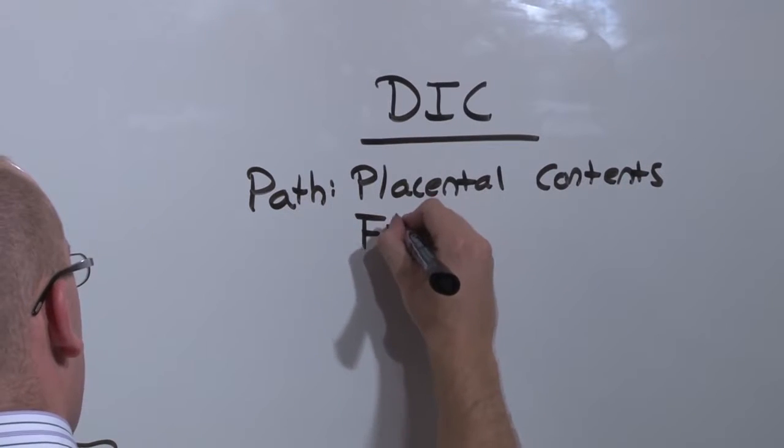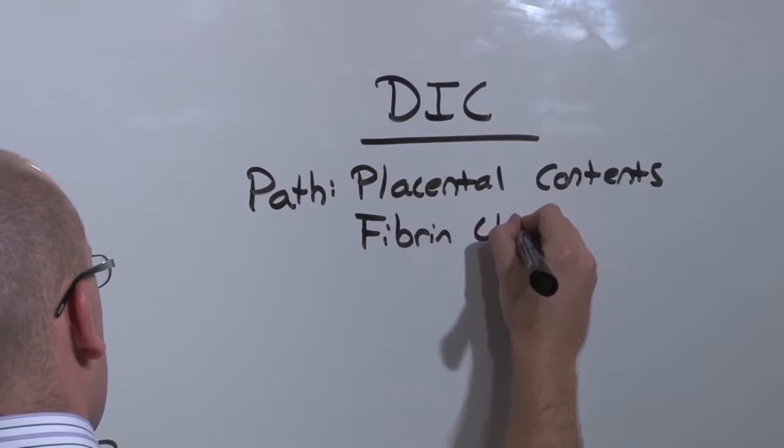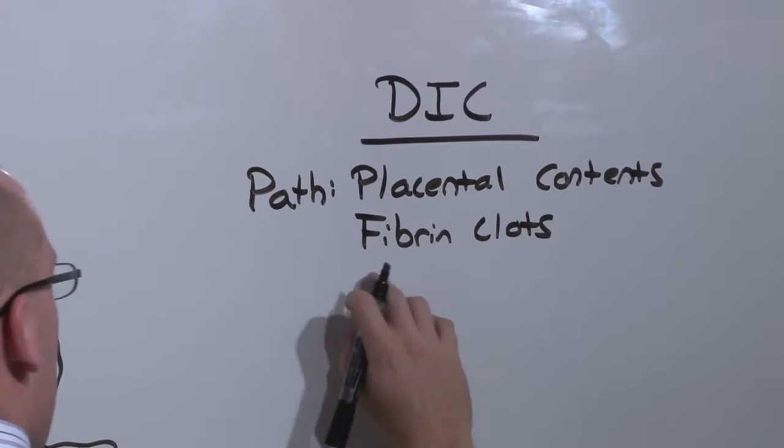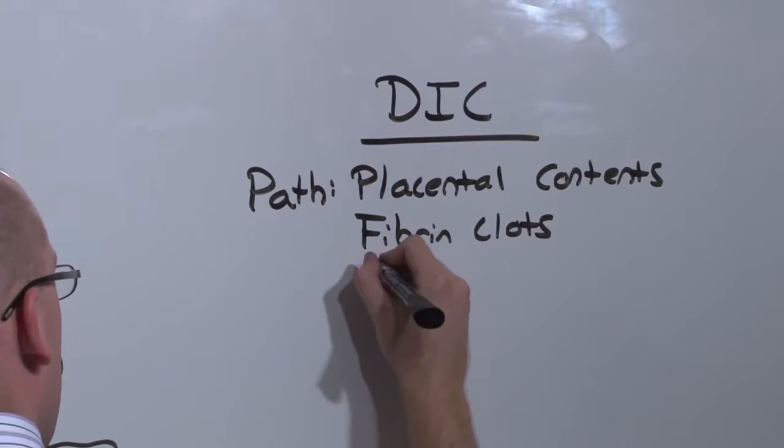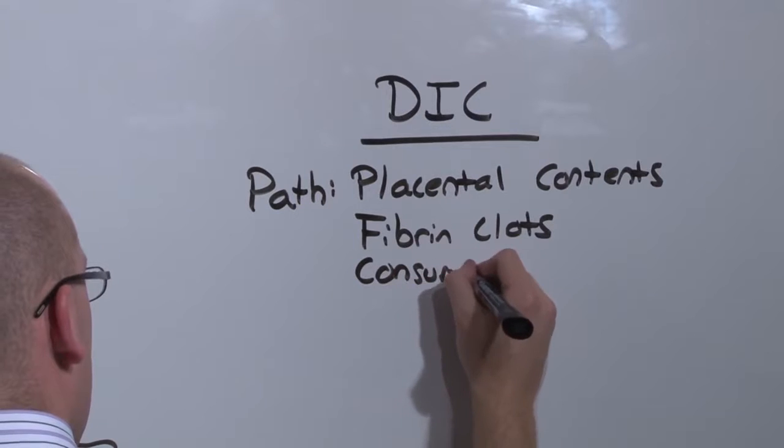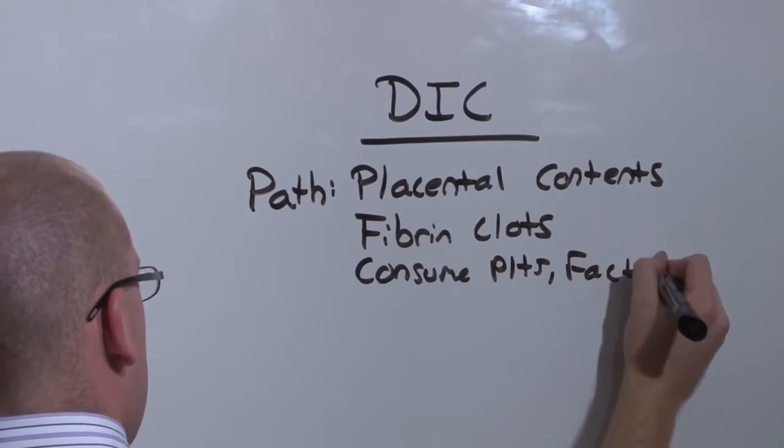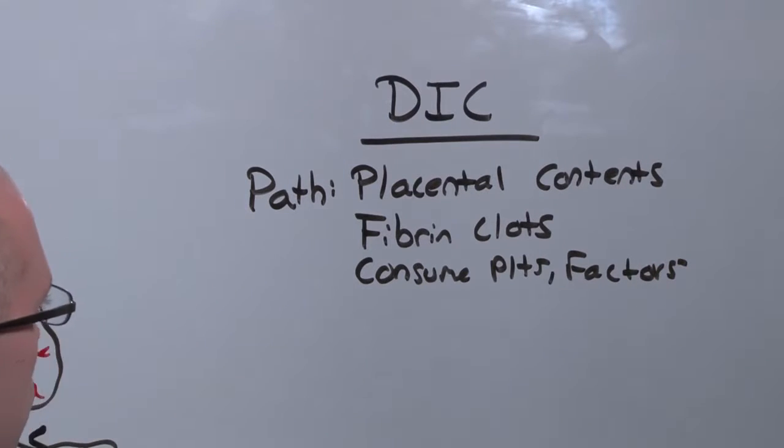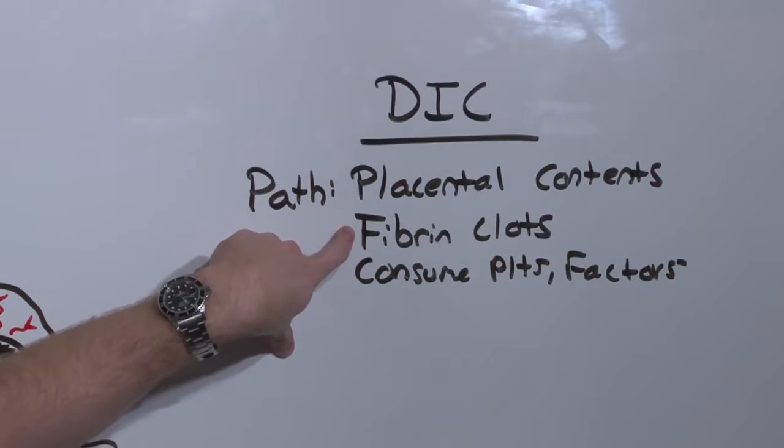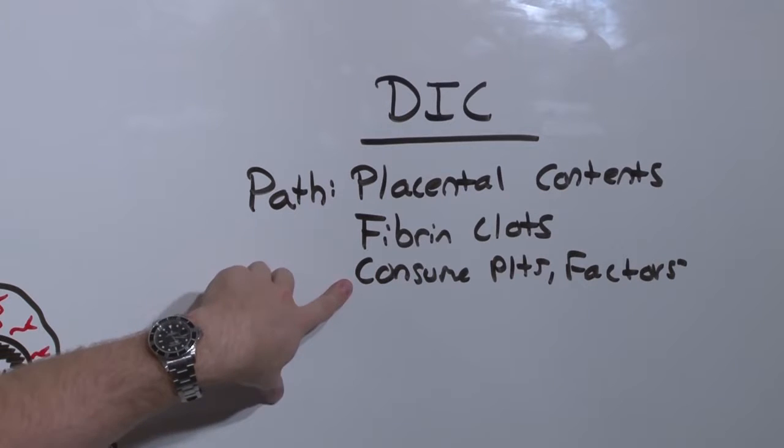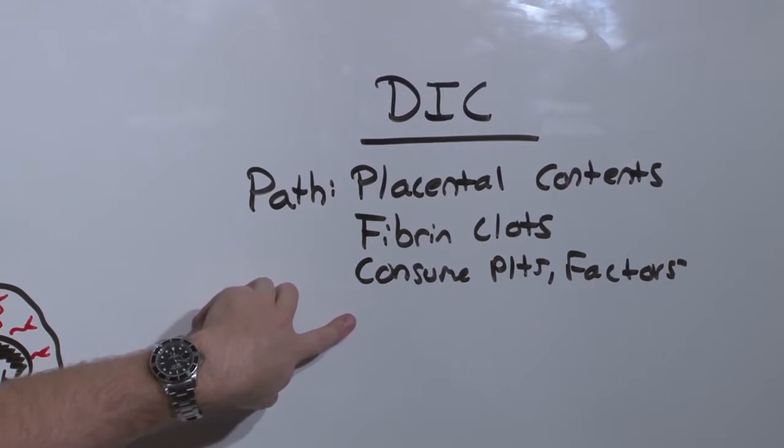And what DIC is, is the formation of fibrin clots. Fibrin clots consume platelets and factors. And so what happens is that clots form where they shouldn't. Use up the stuff that makes clots, so clots that should form don't.